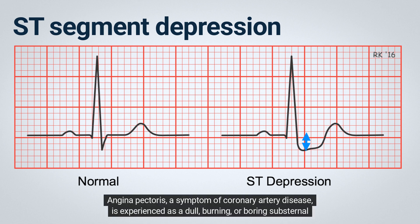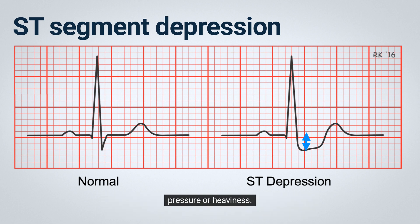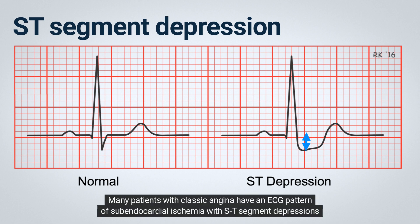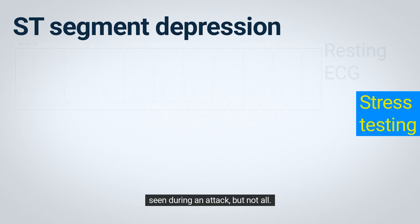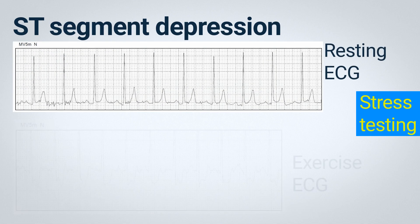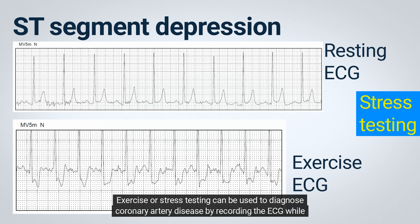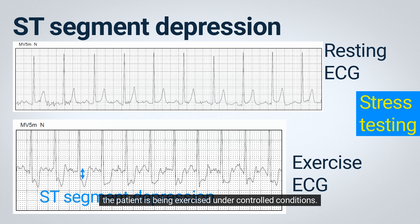Angina pectoris, a symptom of coronary artery disease, is experienced as a dull, burning, or boring substernal pressure or heaviness. Many patients with classic angina have an ECG pattern of subendocardial ischemia with ST-segment depressions seen during an attack, but not all. Exercise or stress testing can be used to diagnose coronary artery disease by recording the ECG while the patient is being exercised under controlled conditions.